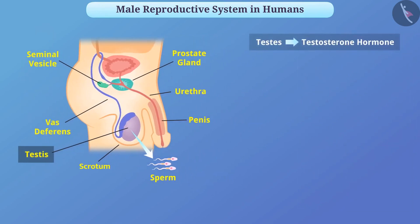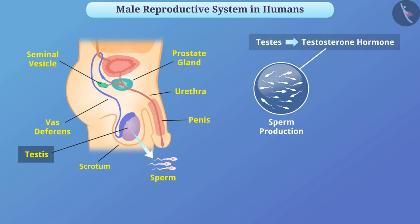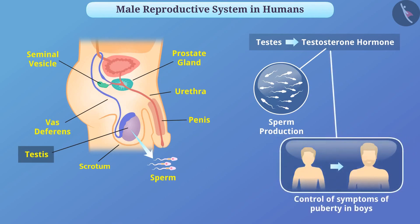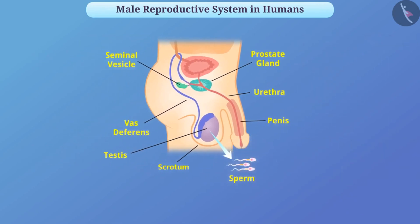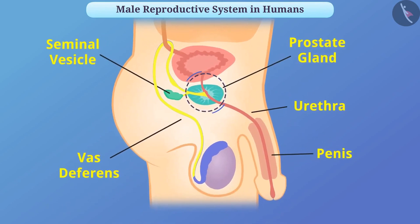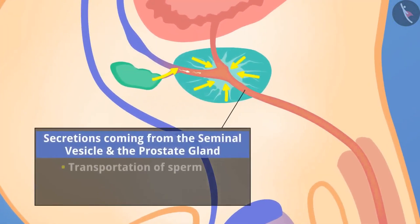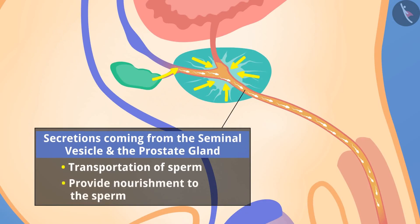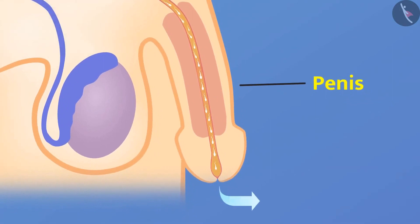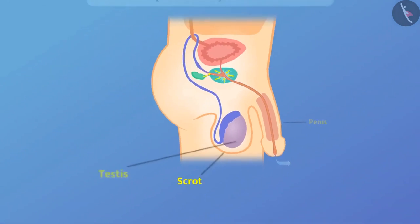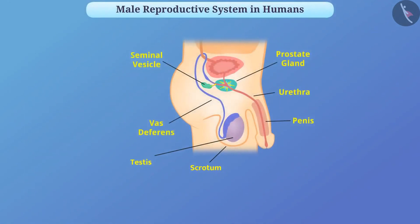Testes also produce a hormone called testosterone which controls sperm production as well as the symptoms of puberty in boys. Transport of sperm is carried by the vas deferens, which joins with the tube coming from the bladder to form a joint tube. The secretions from the seminal vesicle and the prostate gland provide a fluid medium for transportation of sperm and also nourish the sperm. The penis transports this secretion to the female reproductive organ.